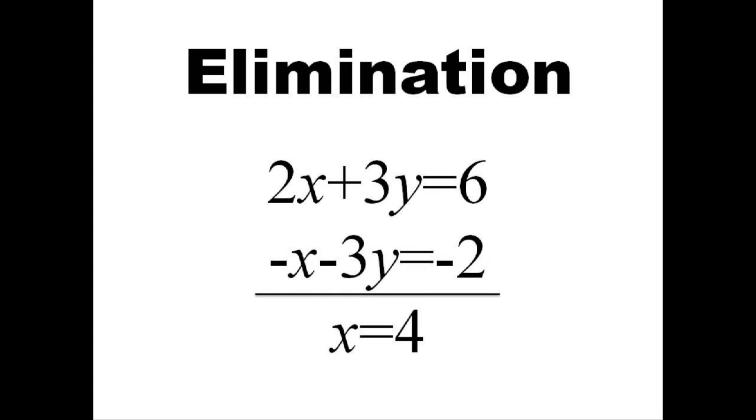After multiplying every term in the second equation by negative 1, the two equations are added together. We're left with 1x on the left side and 4 on the right. Now that we know x equals 4...